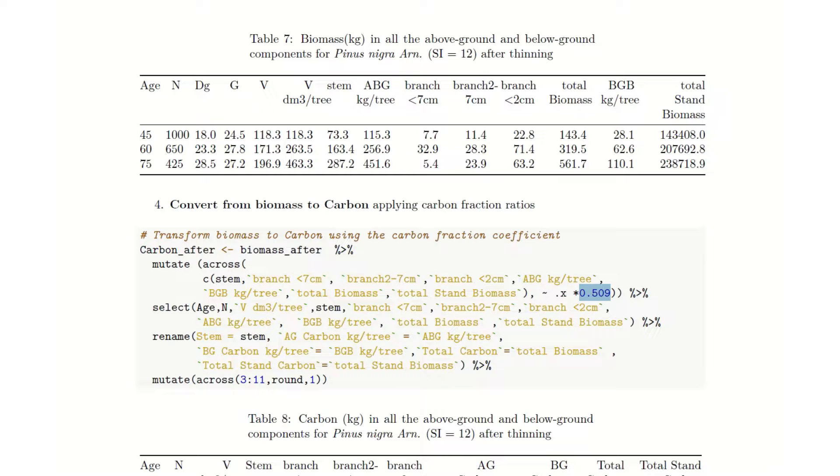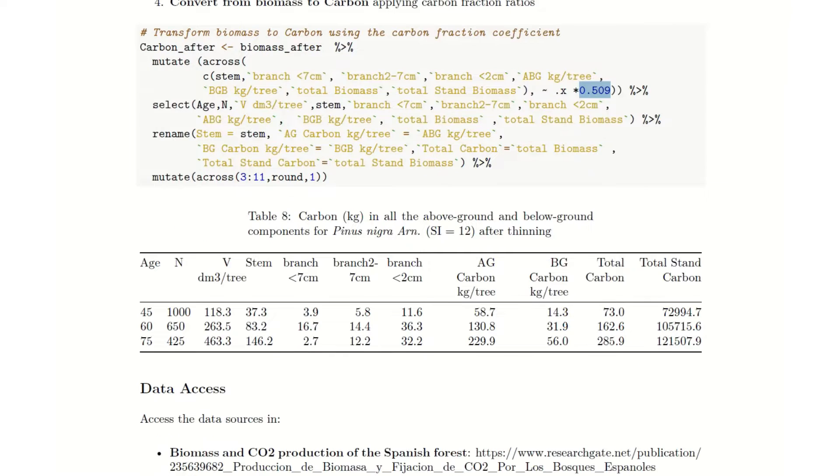Then the next part of the code, we just rename and select the variables for a better and cleaner output. And after running this snippet, we obtain the final carbon result for the plot biomass.